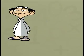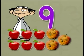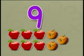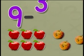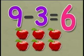Encik Samad bought 9 apples. 3 were rotten. How many apples could be eaten? So, 9 take away 3 equals 6. 6 apples could be eaten.